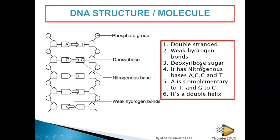DNA has deoxyribose sugar; RNA has ribose sugar. DNA has complementary base pairs; RNA does not, unless it is complementing DNA during translation. RNA doesn't form a double helix because it is single-stranded, shorter, and relatively straight, whereas DNA forms a double helix.